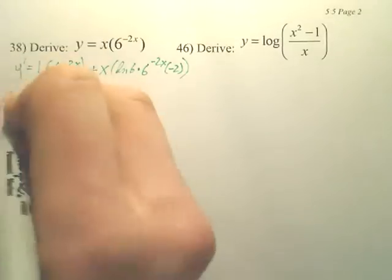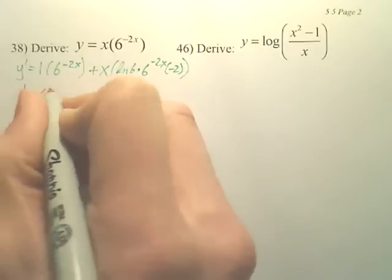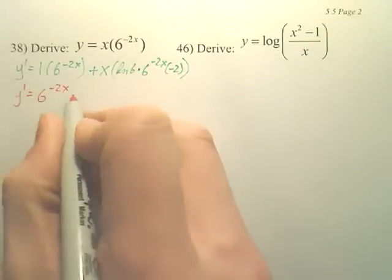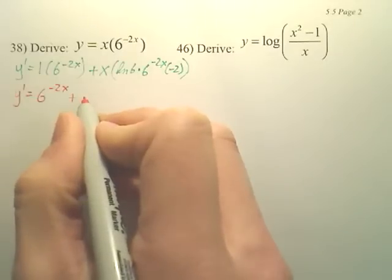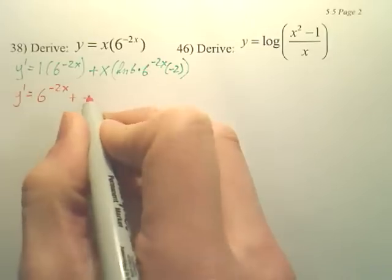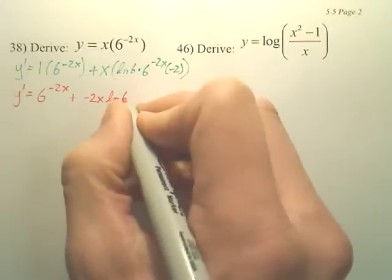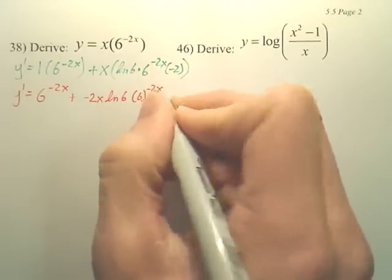Now, to simplify this, it looks like I would have, that one's gone, so 6 to the negative 2x, plus, it looks like we have negative 2x ln 6 times 6 to the negative 2x.